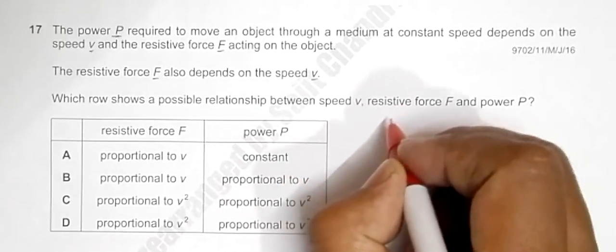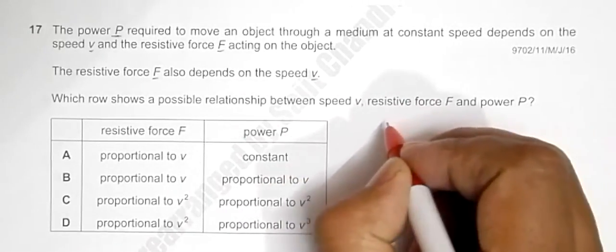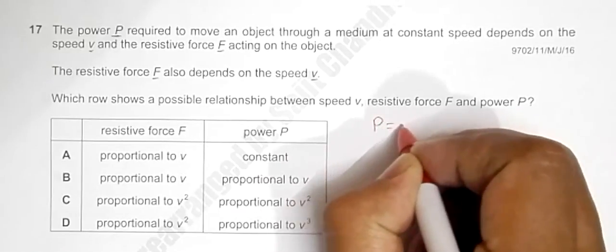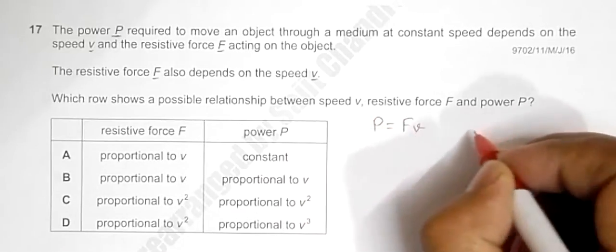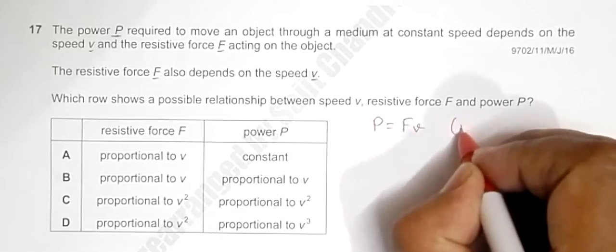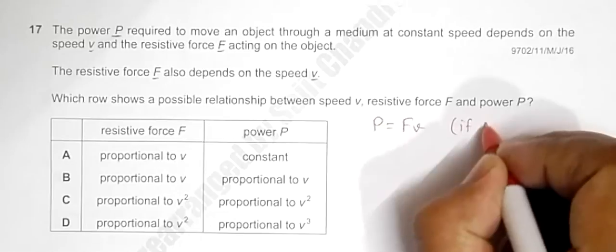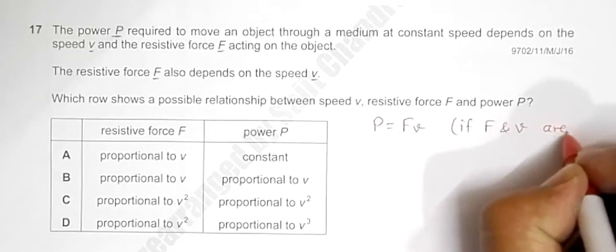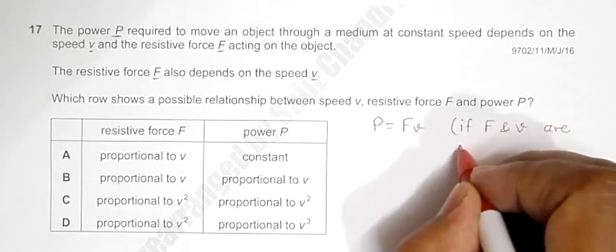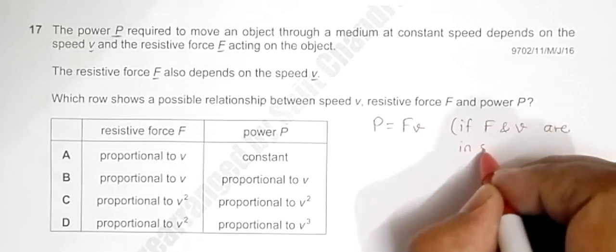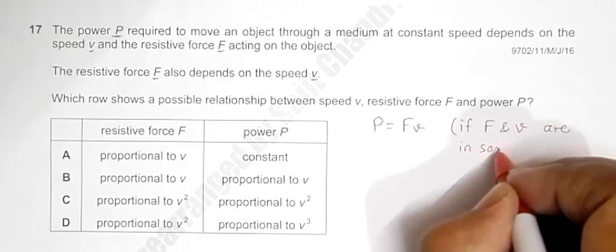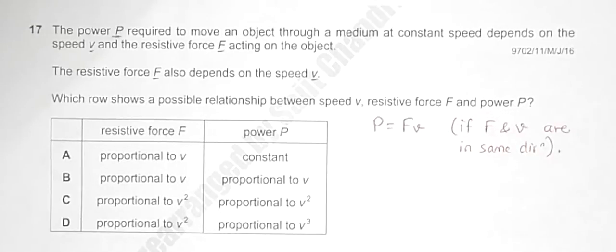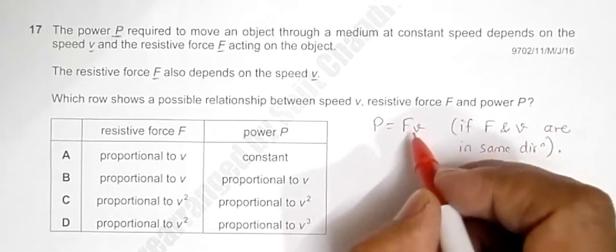What we have is the simple equation between power, force, and velocity: power is equal to force times velocity. This applies when F and V are in the same direction.